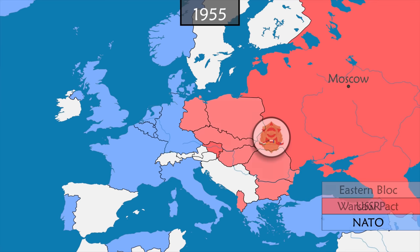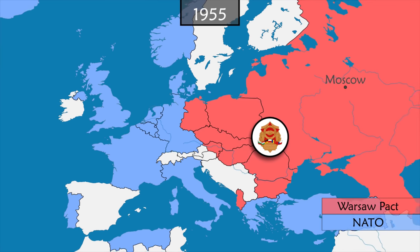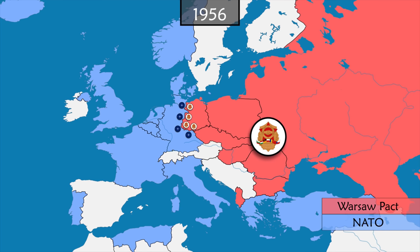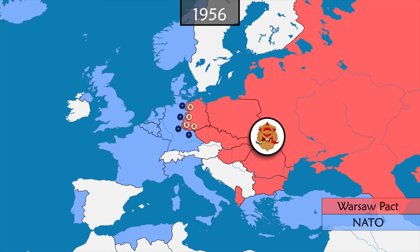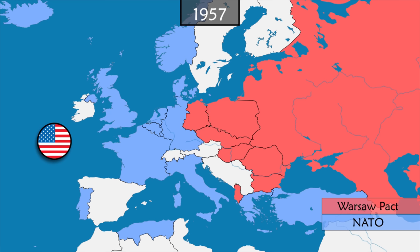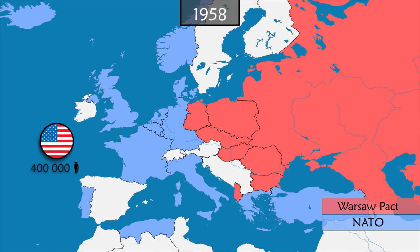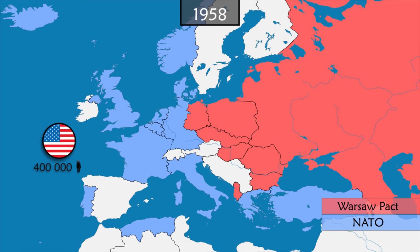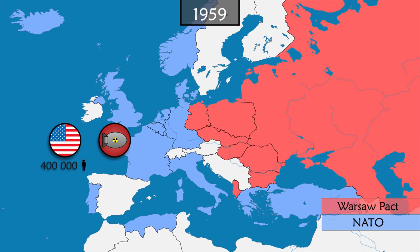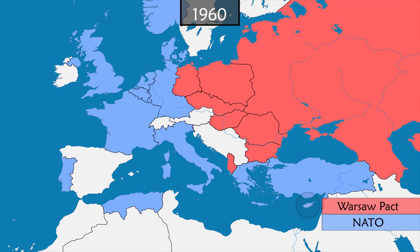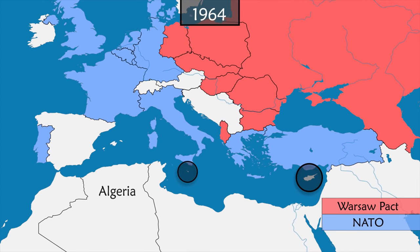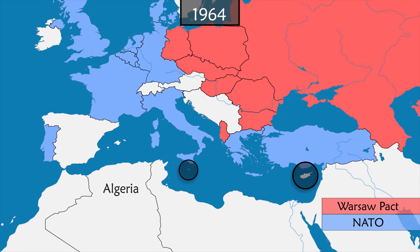A few days later, the Eastern bloc responds by creating the Warsaw Pact, a military alliance between the countries of Eastern Europe. The armies of the two alliances mainly face each other on either side of the border that divides Germany. The United States, with approximately 400,000 soldiers on European soil, bets on nuclear weapons and installs nuclear missiles in Europe. Within a few years, Cyprus, Algeria, and then Malta gain independence, but none of the three new countries applies to join NATO.